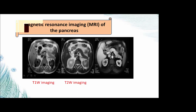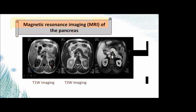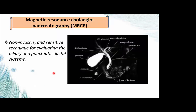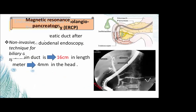On MRI, the pancreas shows high signal intensity on T1 and low to intermediate signal intensity on T2, with homogeneous enhancement in the arterial phase following gadolinium bolus. Magnetic resonance cholangiopancreatography (MRCP) is used to identify the pancreatic duct and biliary system.